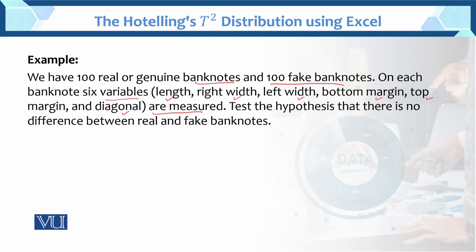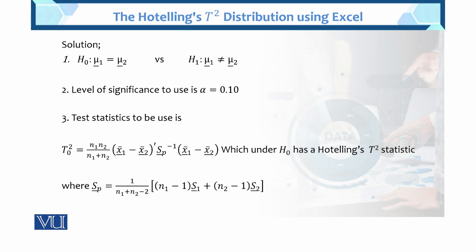The six variables used to determine real versus fake banknotes are: length, right width, left width, bottom margin, top margin, and the diagonal. We need to test the hypothesis that there is no difference between the real and fake banknotes. The null hypothesis is μ1 = μ2 (real equals fake, as mean vectors across six dimensions), versus the alternative that real is not equal to fake.